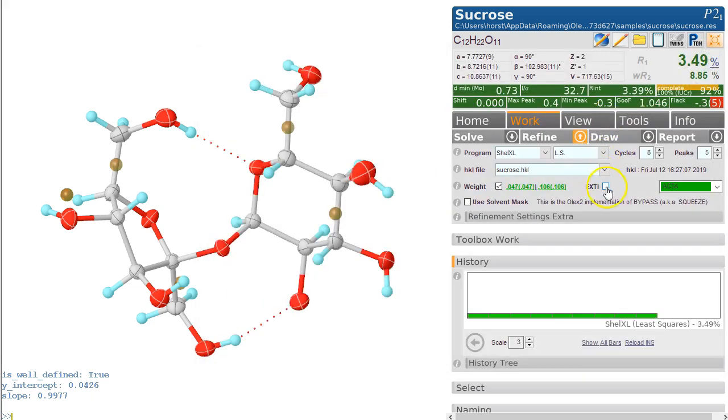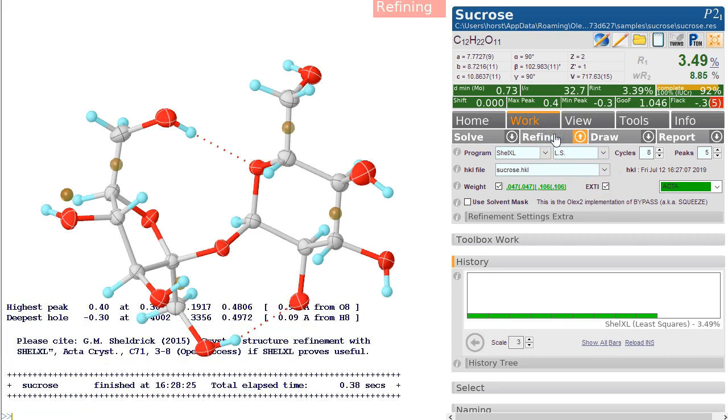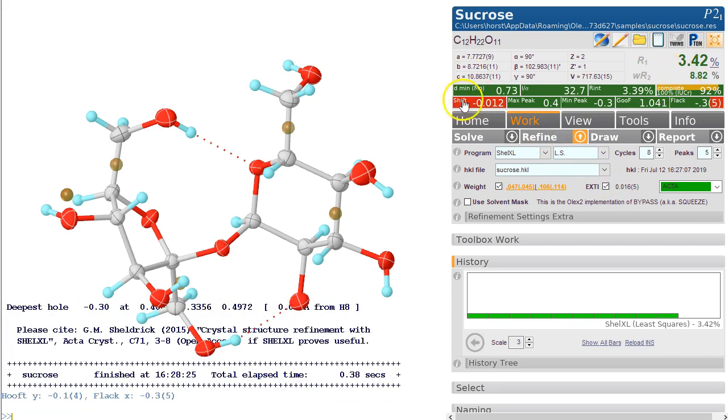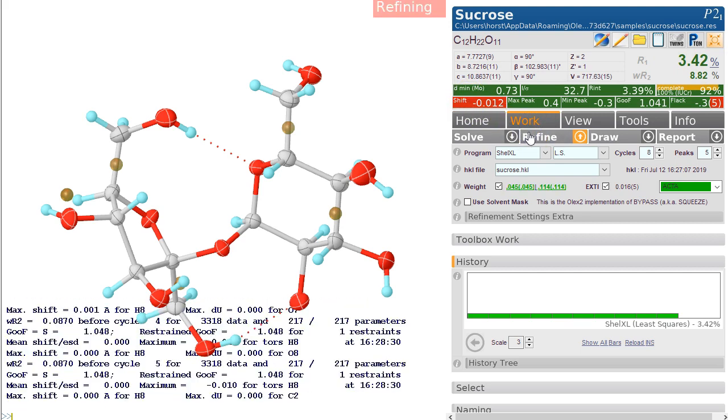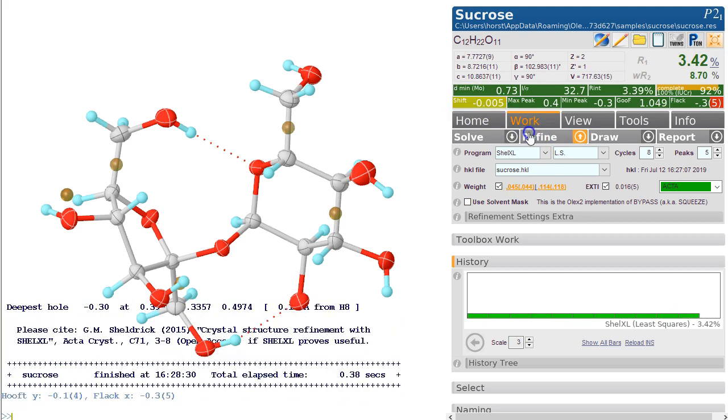That is due to extinction. If you click the extinction button on here and refine this, then this should - yes, it does make a difference. It's still not quite settled. We keep refining this until it's settled and the R-factor is significantly lower than it was before.